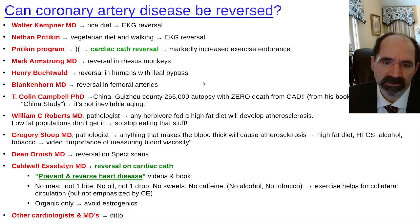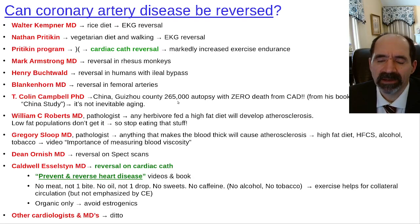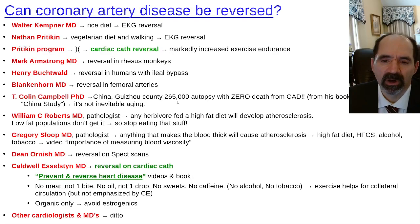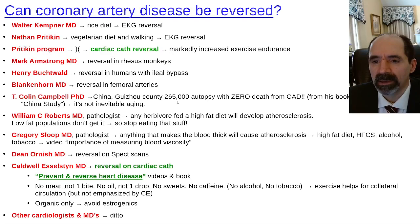T. Colin Campbell, in his China Study, found a county where there were 265,000 autopsies and zero patients who died from coronary artery disease. In the United States at least 26% would have died from coronary artery disease. The point is made: it's not an inevitable part of aging. The typical person thinks, 'I've got atherosclerosis — what are you going to do? It's just part of getting older or it's all genetic.' No — it means you're eating the wrong diet. The incidence of coronary artery disease is zero in populations that eat plant-based diets with no oil.